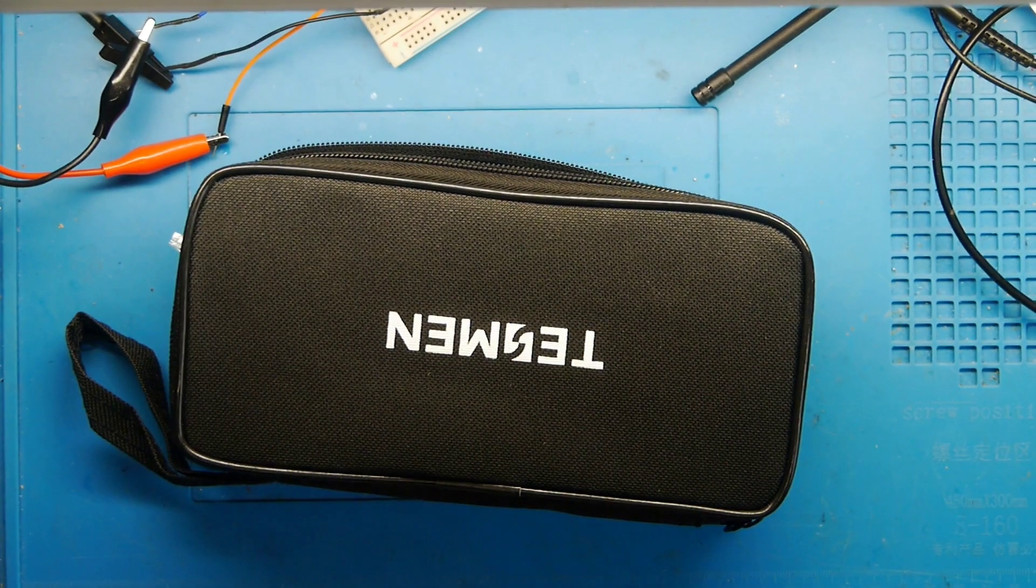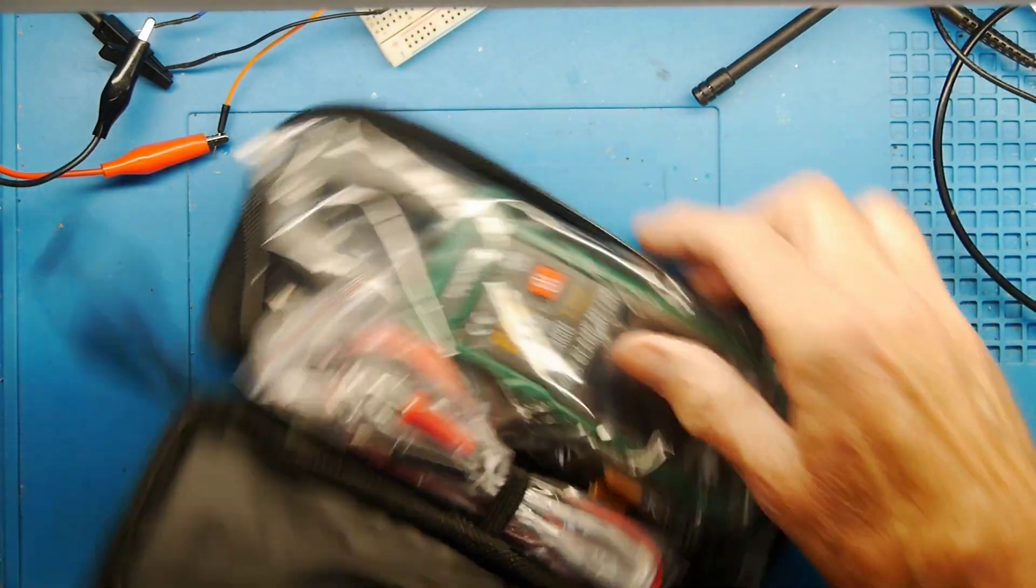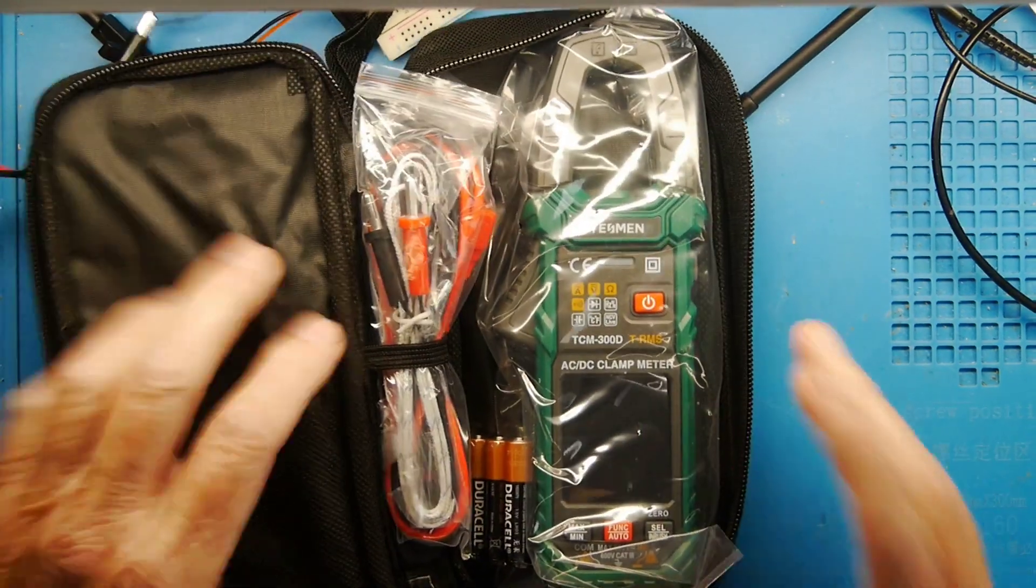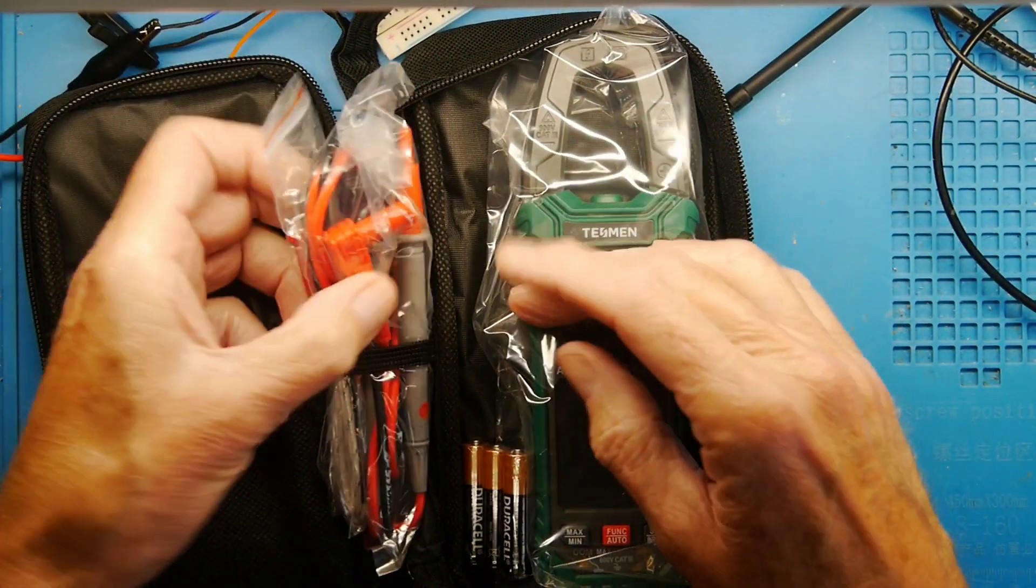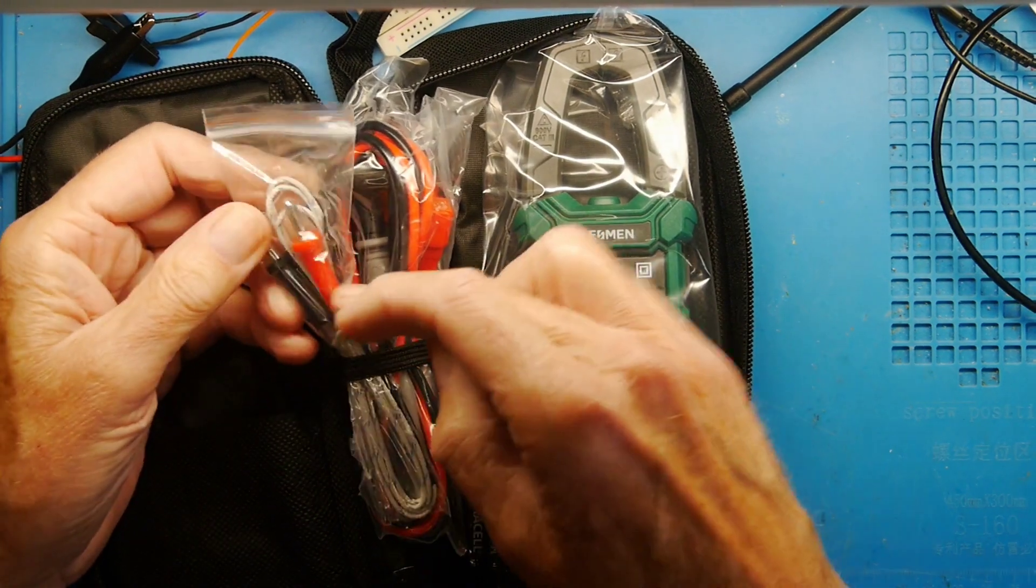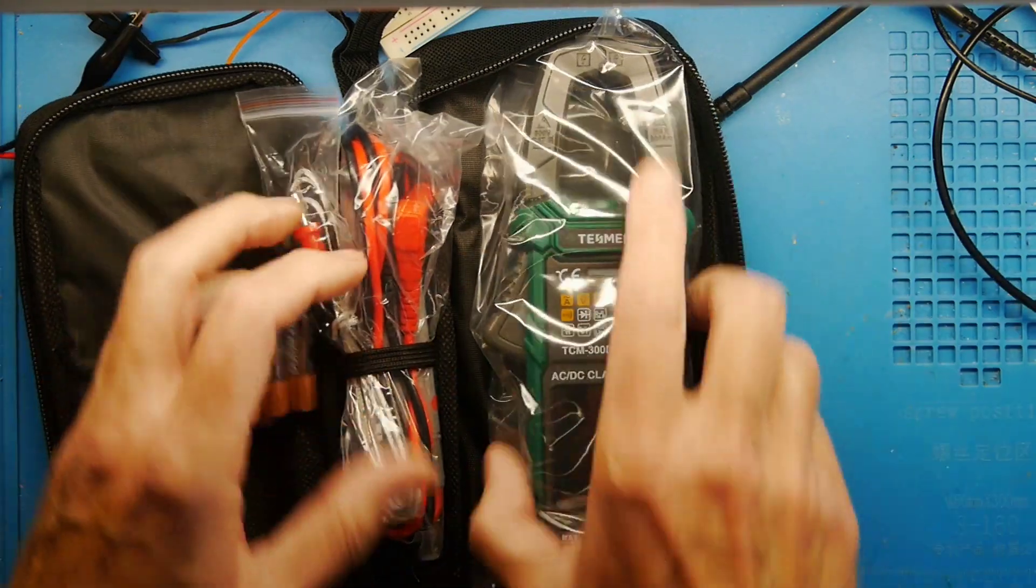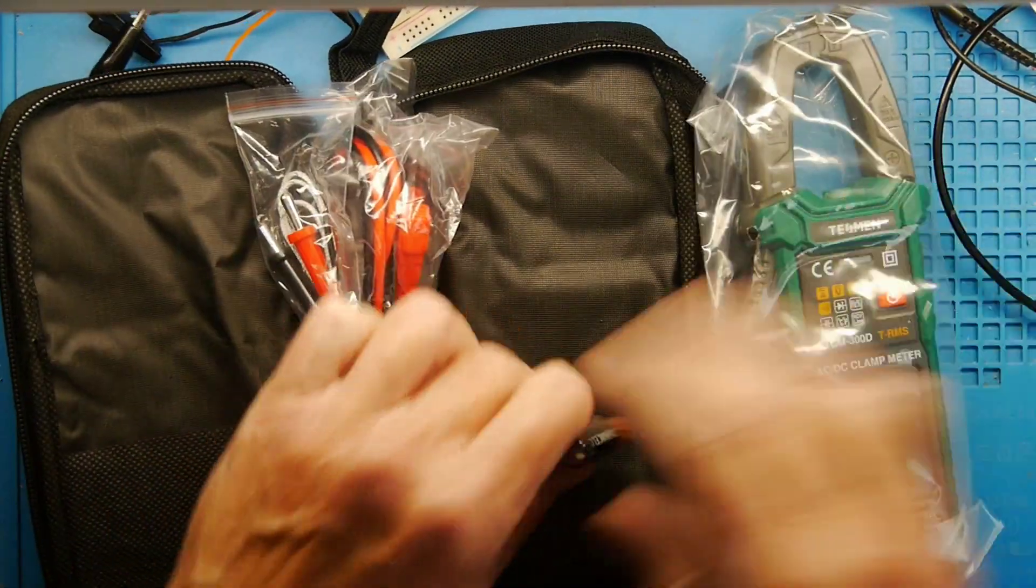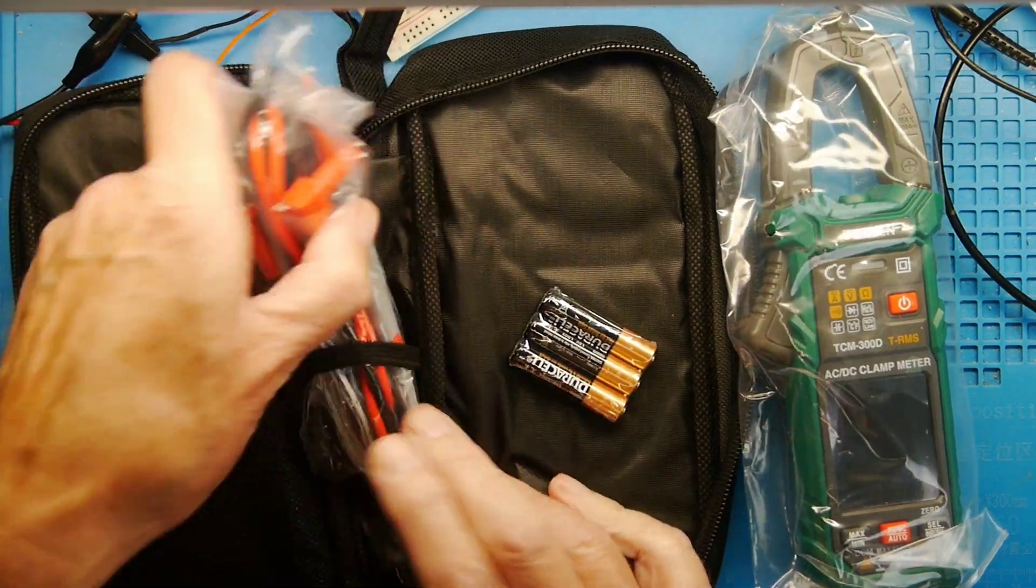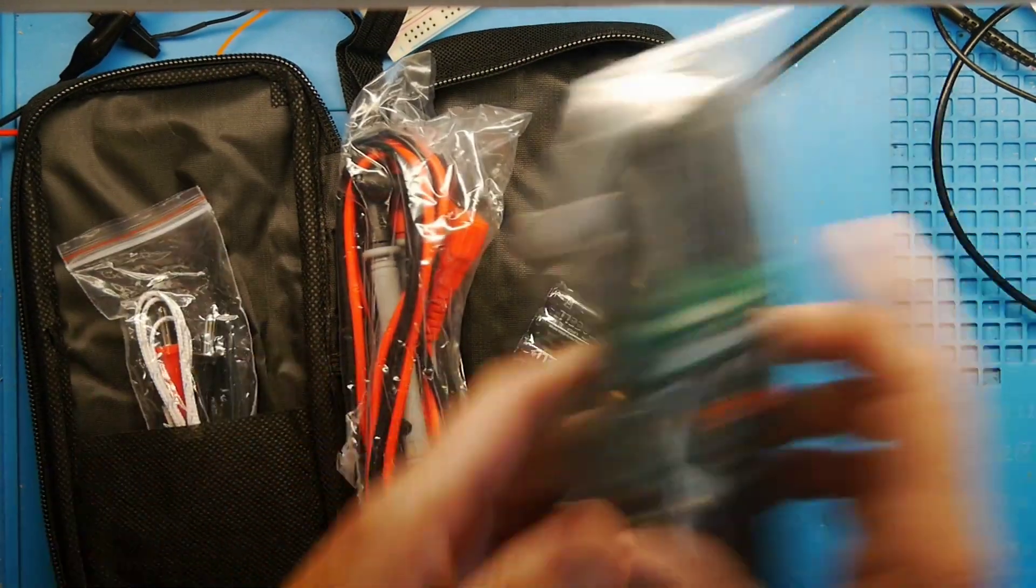The meter itself comes in a zipped pouch, useful if you're going to keep it in a toolbox. As you can see, it's completely unopened so far. Inside we've got a thermocouple, probe set, three Duracell batteries, the meter itself, and some padding in the bag with an elasticated grip to keep things in the back.